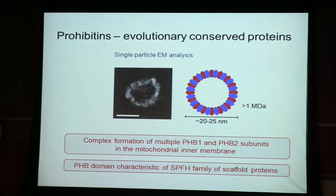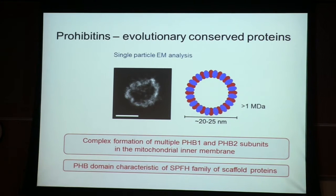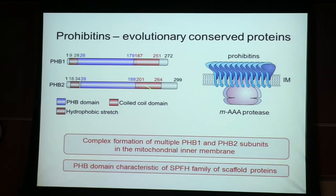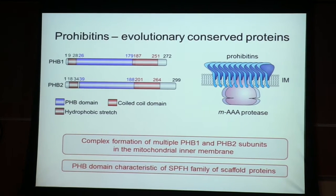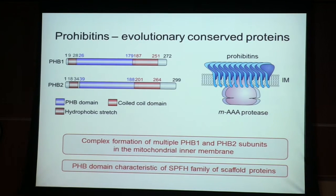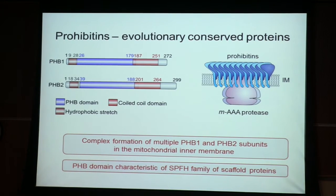This suggested to us that this may be a kind of scaffold membrane-organizing protein in the mitochondrial inner membrane, with multiple copies of PHB1 and PHB2 forming these ring-like structures. Prohibitins are part of an even more broadly distributed protein family called the SPFH family. They all share a common domain, have the same topology in the inner membrane, and are thought to form similar structures in other cellular membranes — so this may be a conserved family of membrane-organizing proteins.